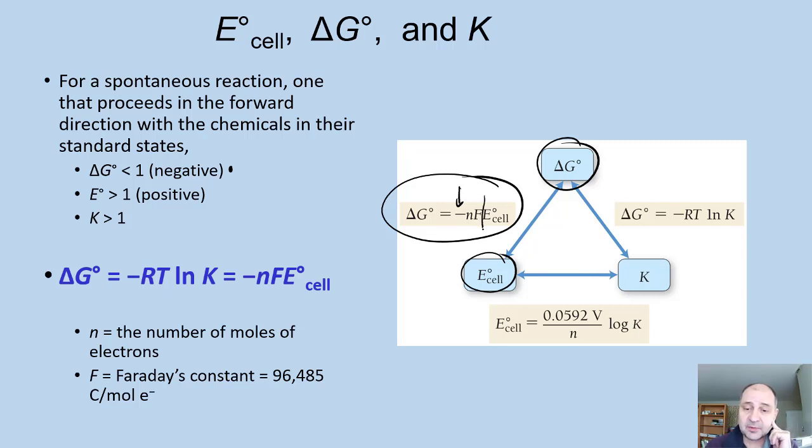This is the potential that we can calculate. N is the number of moles, and F is Faraday's constant. Faraday's constant is simply the current of one mole of electrons. We measure current in Coulombs, and of course, the more electrons we have, the higher the current is.